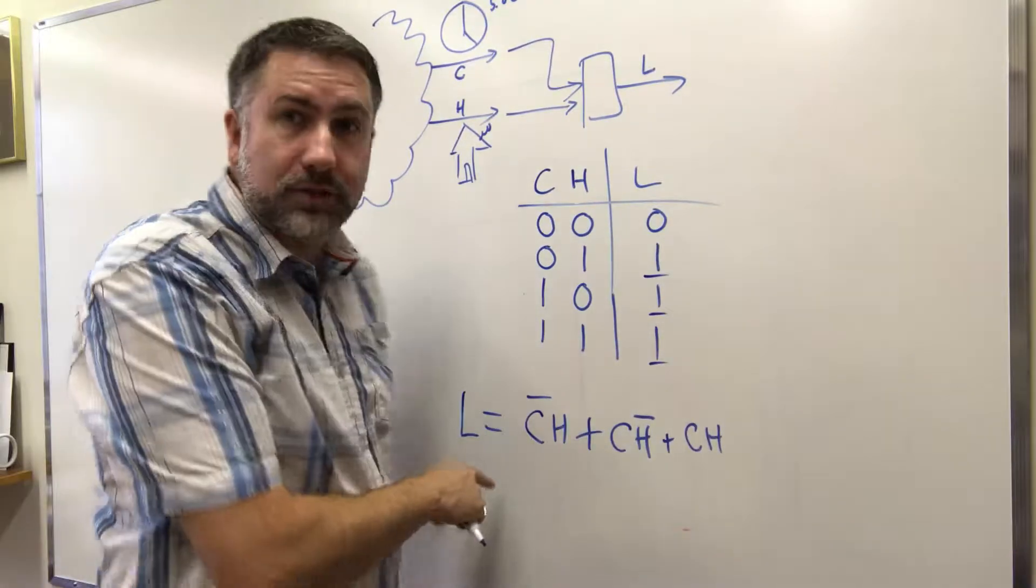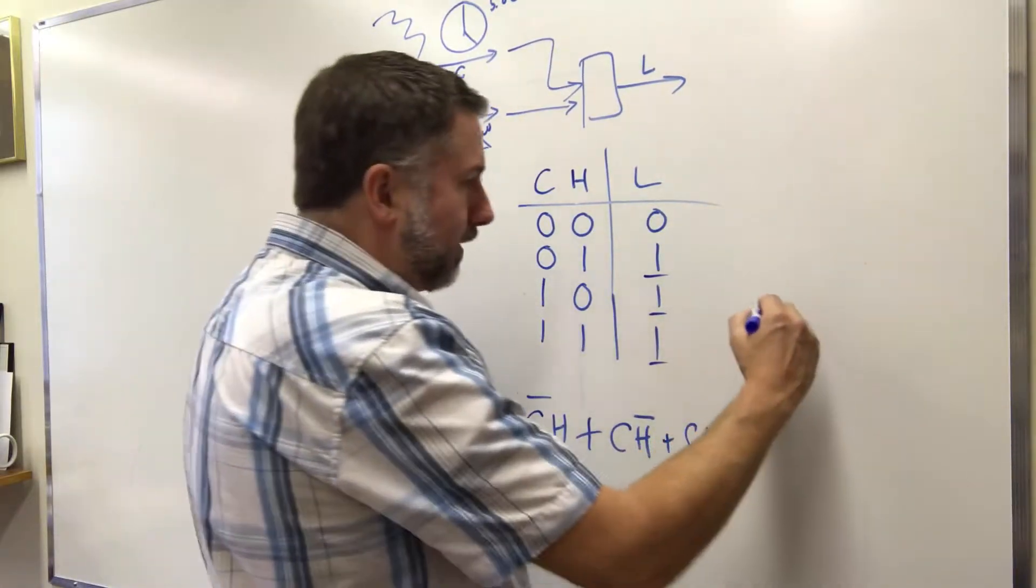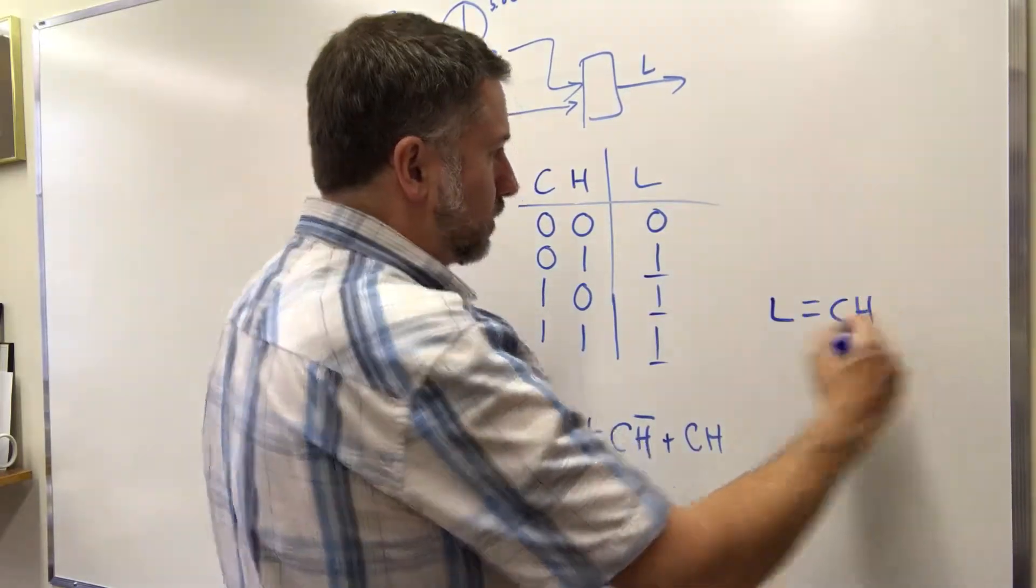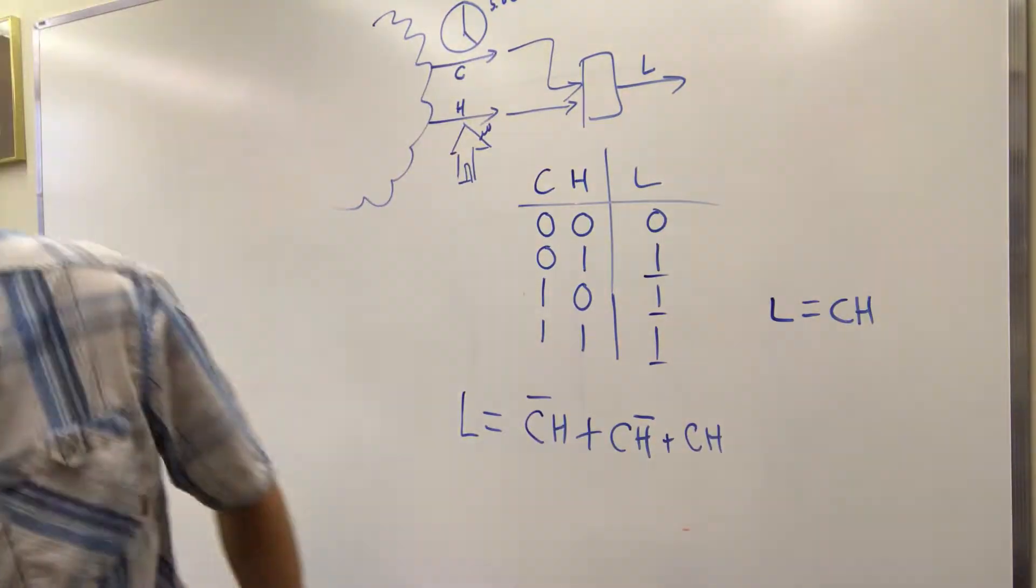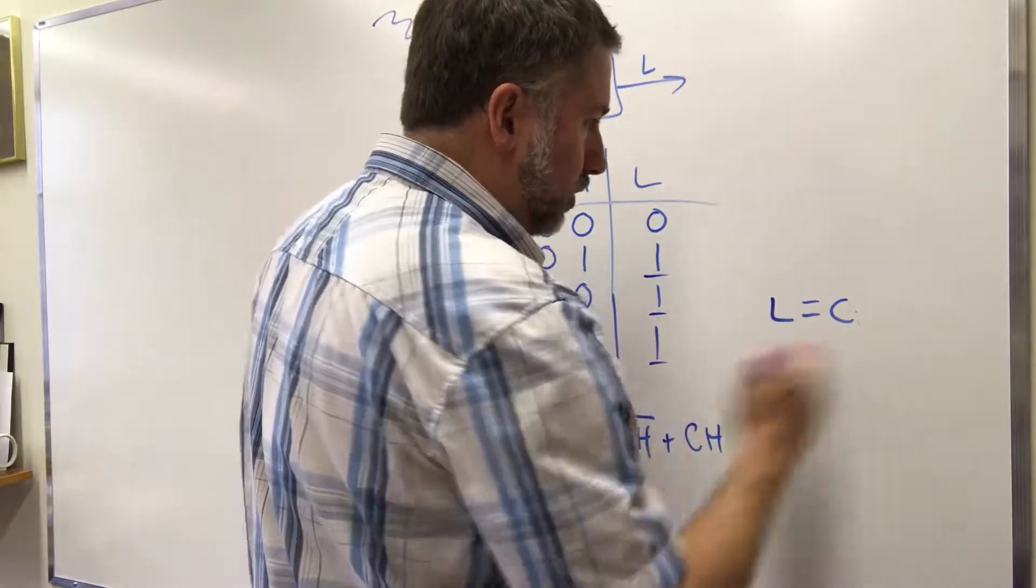So these are the three terms that correspond to the situation where this equals 1. Now, we can do some simplification on this and get to the point where we know L equals C OR H is our answer because that looks like an OR gate. Sorry, not CH, C OR H. That looks like an OR gate.